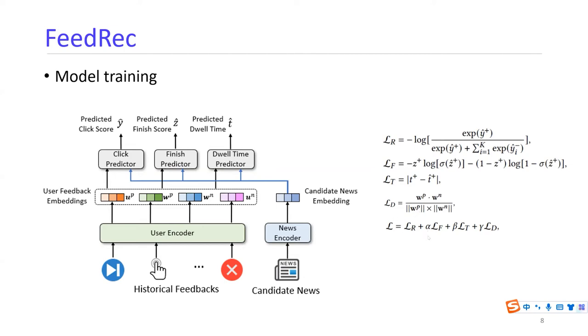We use three coefficients, alpha, beta, and gamma, to control the relative importance of the loss functions, and these are hyperparameters.